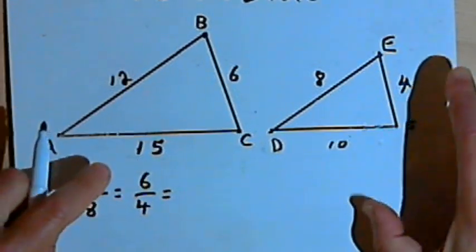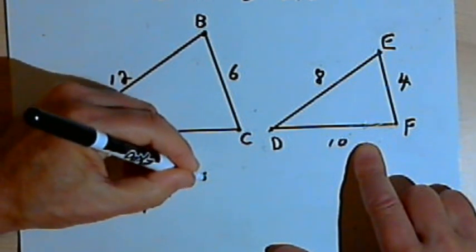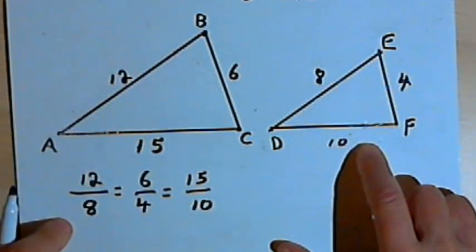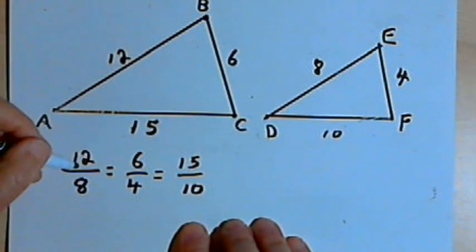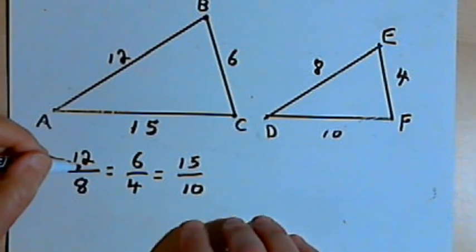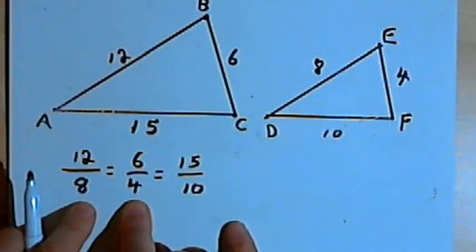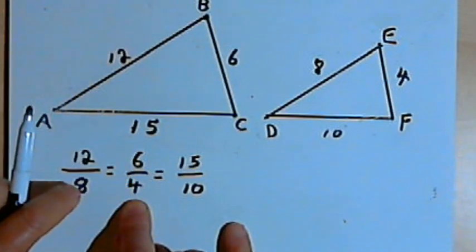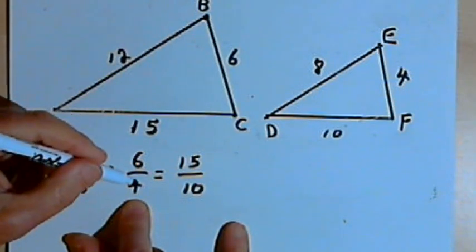Then I'll do the same thing with the third pair of corresponding sides. Side AC is 15 units long, and its corresponding side is DF, which is 10 units long. Now I want to see if these three ratios are equal to each other. I could reduce each fraction or take pairs of ratios and cross-multiply. 12 times 4 is 48, and 6 times 8 is also 48, so 12 over 8 equals 6 over 4.